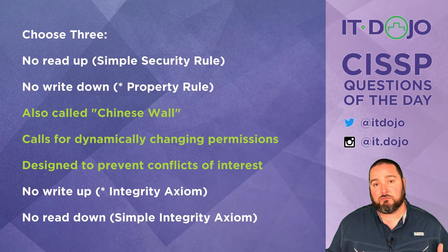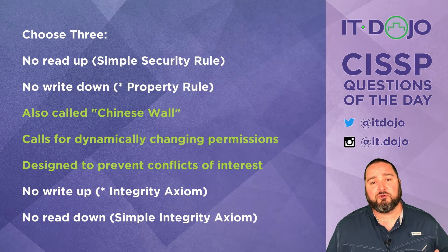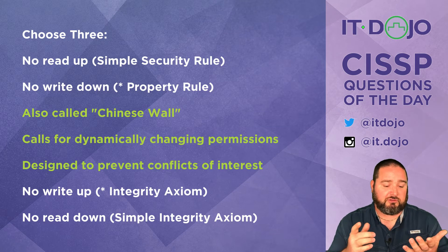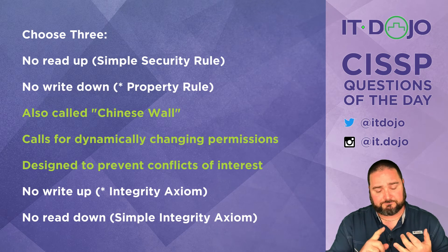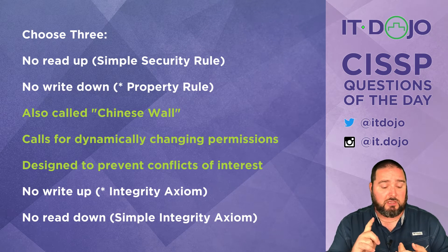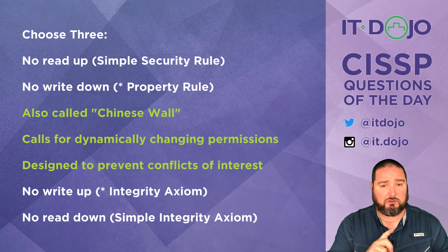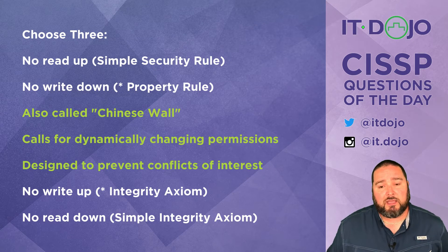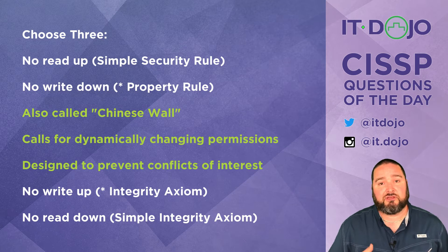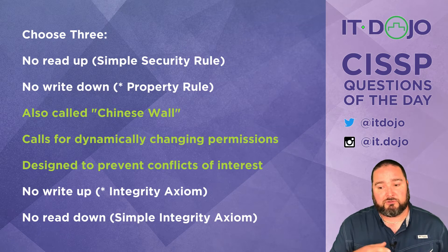In order to address this, the Chinese Wall model is designed around a few key concepts. First, there are subjects — there are users who are going to be associated as principals on the system, meaning you have a particular context in which you'll interact with information. Then there are objects. And then we have something called a company data set and something called a conflict of interest class.